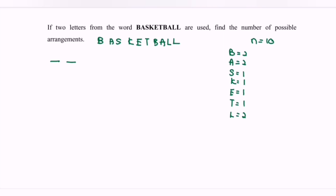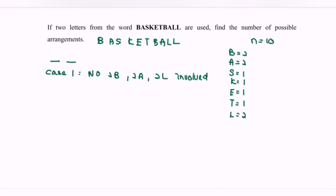Since we need two letters, we have two places. For Case 1, we consider no two B's, no two A's, and no two L's involved. This means none of the repeated pairs are used — only one B, one A, and one L are allowed in this case.